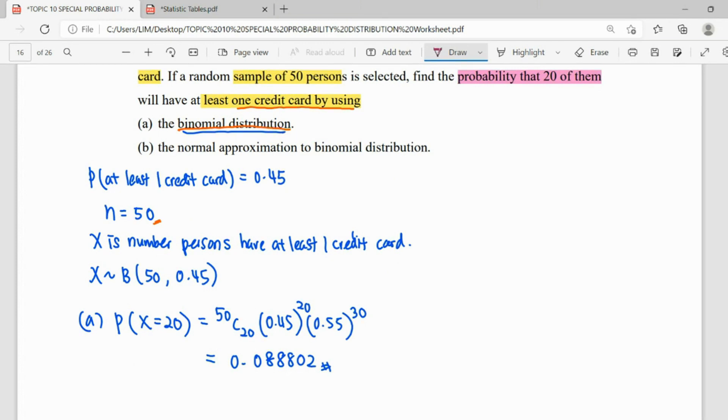Okay, so for the second question, they asked you to do approximation. As we can see, actually the first situation, n is already greater than 50. This is the first condition. Second condition, we find the mean np. We calculate 50 times 0.45, which equals 22.5. It's already more than 5, so the second situation is also fulfilled.